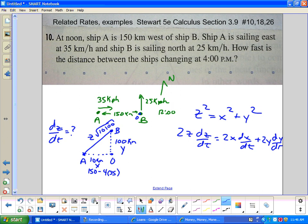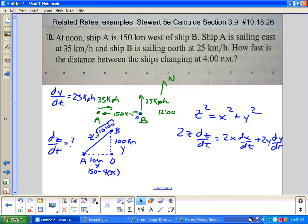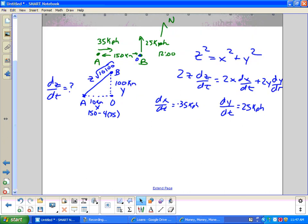Pretty straightforward problem because it's Pythagorean theorem based. So Z squared equals X squared plus Y squared. Take the derivative: 2Z dZ/dt equals 2X dX/dt plus 2Y dY/dt. All the 2's will cancel.